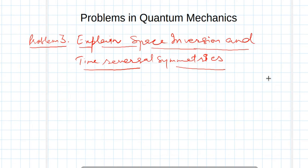I have again tried to explain some problems. In this I am going to talk about space inversion and time reversal symmetry. It's a brief idea about these two terms — one is space inversion and another is time reversal symmetry. These are very important terms in quantum mechanics. So let us try to explain these.